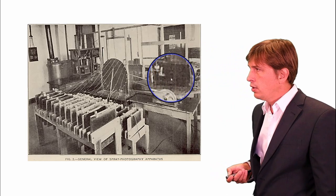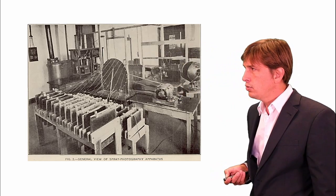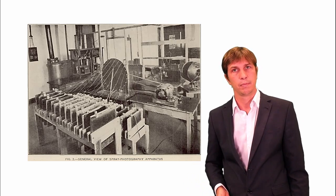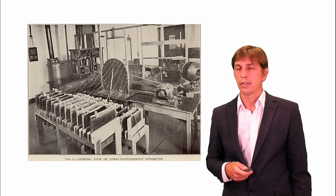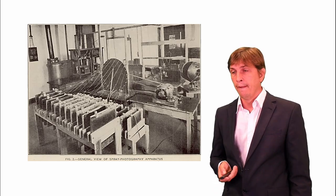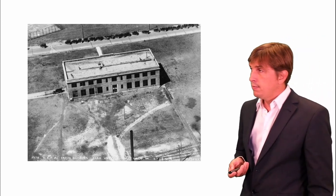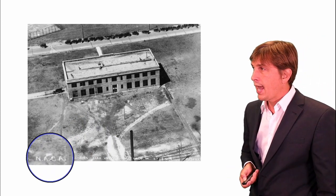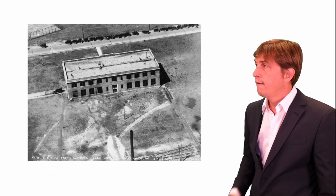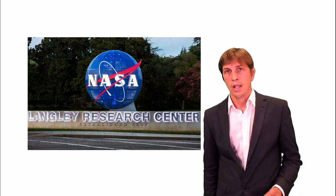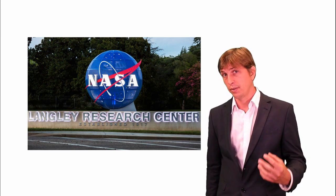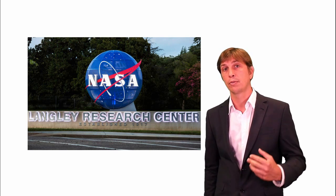Another motor was used to rotate very rapidly the photographic film on which the images were exposed. This was probably, without any doubt, the most advanced laboratory for spray characterization. It was located in the main building of the NACA, standing for the National Advisory Committee for Aeronautics — today this corresponds to NASA. One of the first experiments done at the early birth of NASA was focusing on the study of atomizing sprays for propulsion.